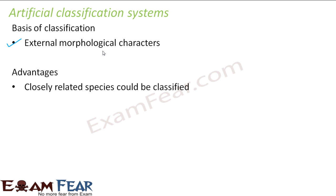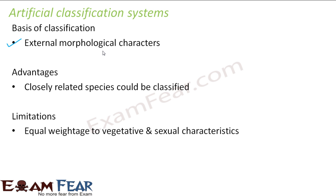Now, looking at its limitations: equal weightage was given to vegetative and sexual characteristics. Vegetative characteristics are the somatic structures of plants — that means the structures of the plant body. Examples of vegetative characters are the root system, the shoot system (that is the stem), and the leaves of the plant.